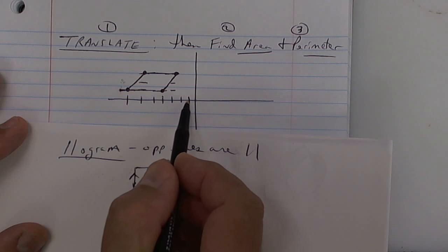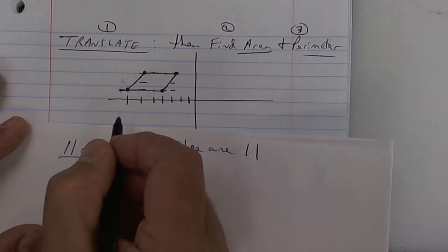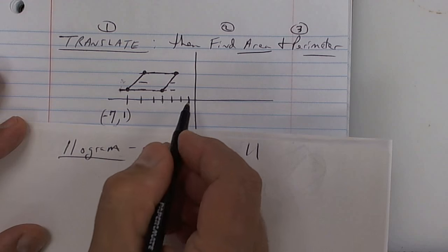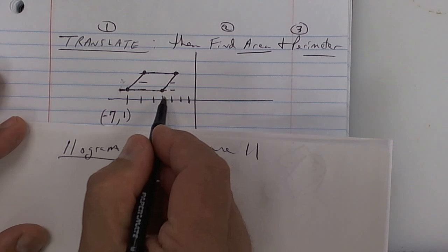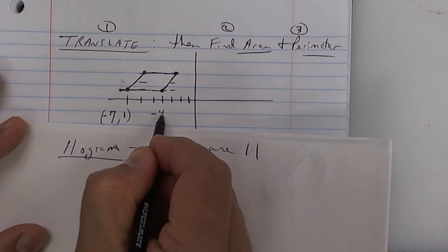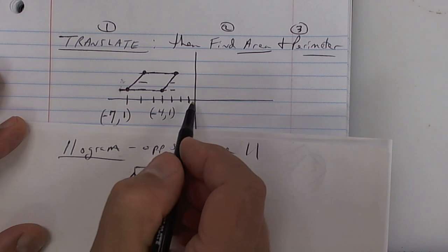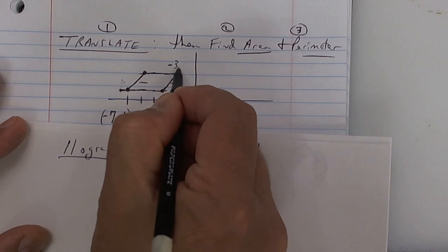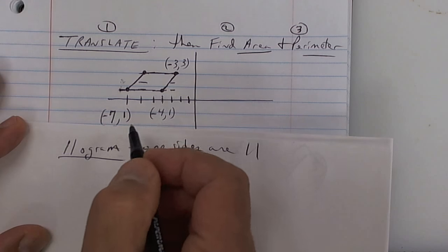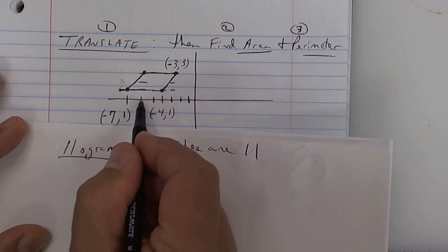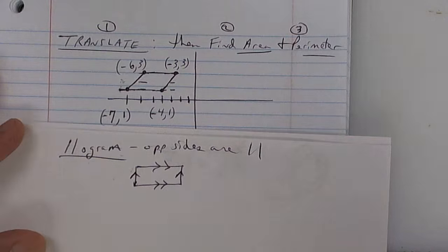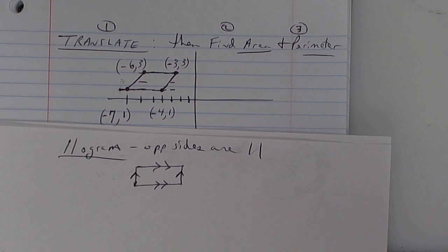This point looks like negative 7, up 1. This point is negative 4, up 1. This one is negative 3, up 3. And then finally, this one looks like negative 6, up 3. Copy this down. We're going to find the area and perimeter of this, but we were going to translate it first. Today I'm going to have you translate it — all you have to do is translate one point. Actually, I'm going to skip the translation again, because that's just one more thing you've got to do and it's going to slow you down. So let's just skip translation, but let's find area and perimeter.